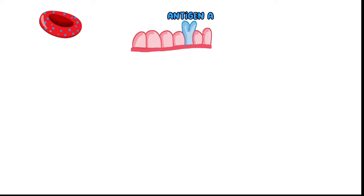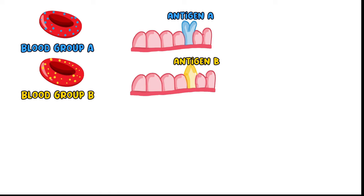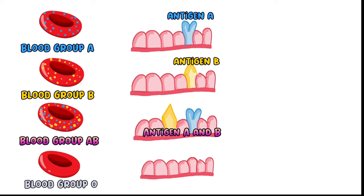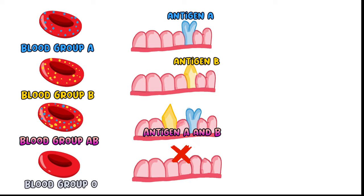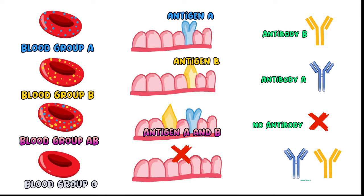If your RBC has antigen A, then your blood belongs to blood group A. If your RBC has antigen B, then your blood belongs to blood group B. In blood group AB, both antigens A and B are present. The exception is blood group O, where no A or B antigens are present on the surface of RBC. A person with blood group A will make antibodies against blood group B, and vice versa. Blood group AB makes no antibodies, while blood group O makes antibodies against both blood group A and blood group B.